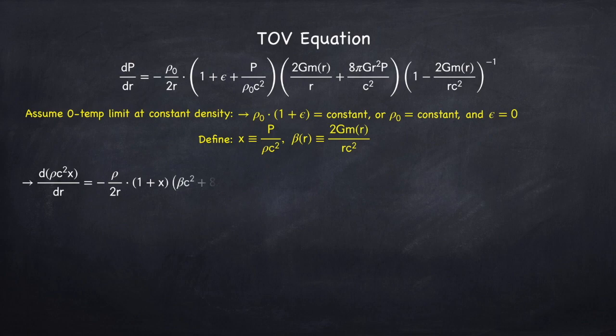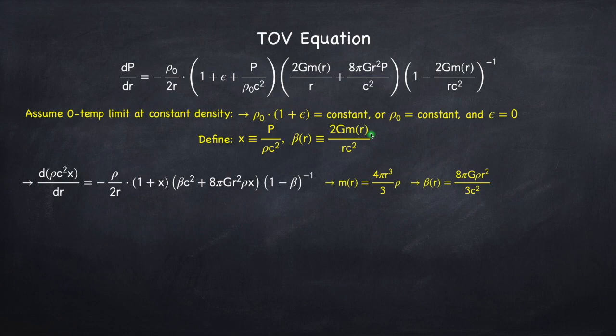Now let's substitute these two variables into the TOV equation. Since the density is constant, we have that the mass is just the volume times the density. I can plug this into beta to find that beta is proportional to r squared.